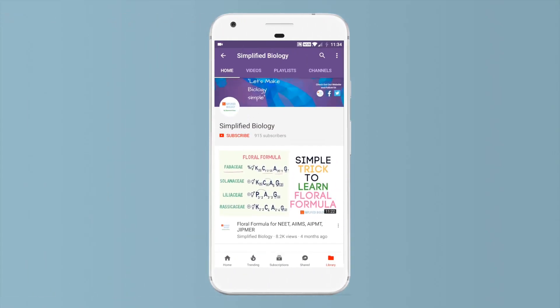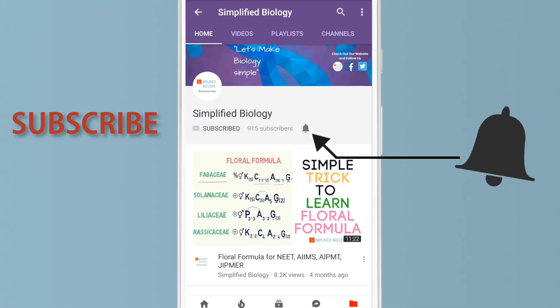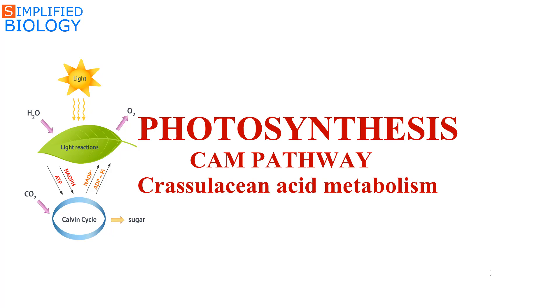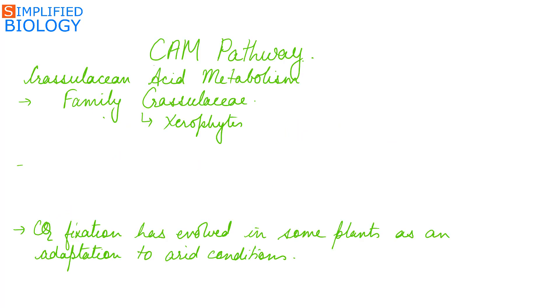Subscribe to Simplified Biology channel and press the bell icon to get notified when a new video is uploaded. Hello friends, welcome to Simplified Biology. Today's topic is CAM pathway, Crassulacean Acid Metabolism, of the chapter Photosynthesis.